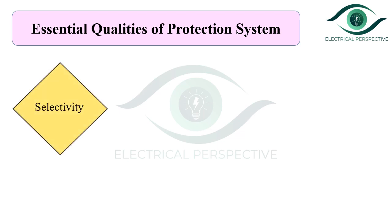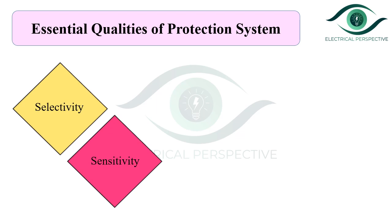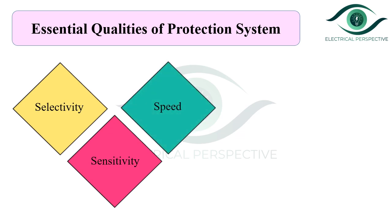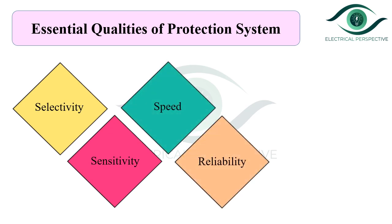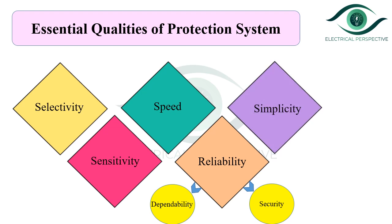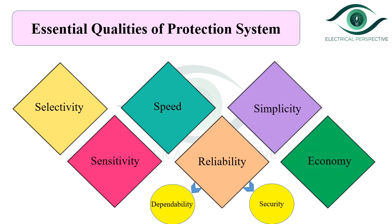The six essential qualities are: selectivity, sensitivity, speed, reliability — which has two aspects: dependability and security — simplicity, and economy. We will discuss each one in detail.